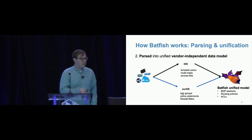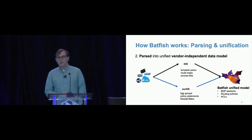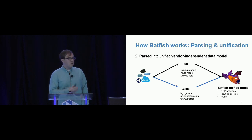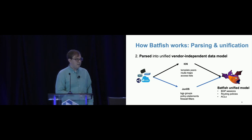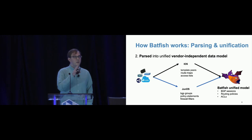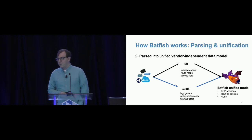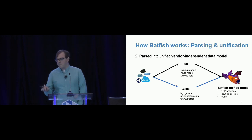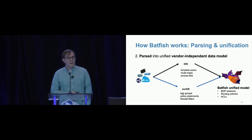For example, in Cisco IOS you might configure BGP using template peers, route maps, and access lists, while on Junos you use BGP groups, policy statements, and firewall filters. We parse this configuration, abstract it out, and unify it into the Batfish model where we only need to reason about BGP sessions, routing policies, and ACLs.